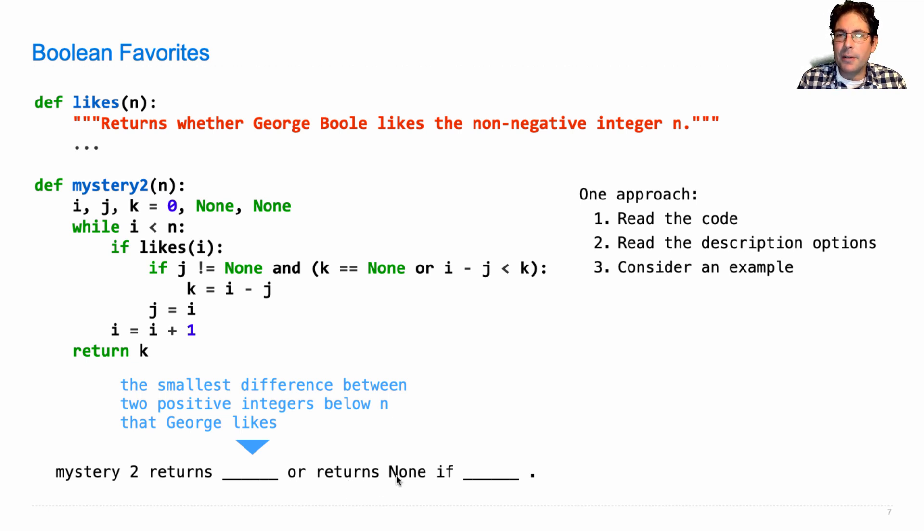When's it gonna return none? Well, if k never gets assigned, which means this whole expression is always false. And as soon as you have a j and k is none, you're gonna assign k. And as soon as you have an i, you're gonna have a j. So if George doesn't like any numbers, then we'll never go in here. k will never get assigned, and it'll be none.